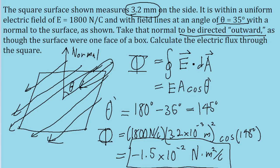a general rule of thumb is that when field lines are traveling into the surface, we can always expect negative flux.